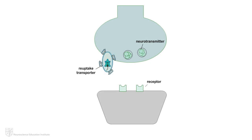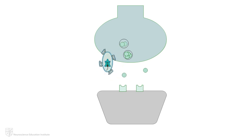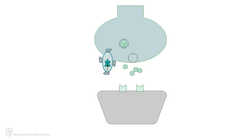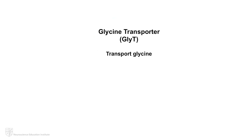Reuptake transporters help to maintain the balance of synaptic levels of neurotransmitters. After a neurotransmitter is released into the synapse to act on its receptors, a transporter removes the neurotransmitter from the synapse and transports it back into a neuron or glial cell. There are specific reuptake transporters for a variety of neurotransmitters, and if we pharmacologically inhibit a reuptake transporter from removing its respective neurotransmitter from the synapse, we can expect that synaptic levels of that neurotransmitter will be elevated.